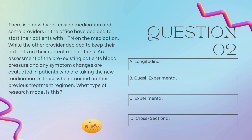Question number two: There is a new hypertension medication, and some providers in the office have decided to start their patients with hypertension on this medication, while the other providers decided to keep their patients on their current medications. An assessment of the pre-existing patients' blood pressure and any symptom changes are evaluated in patients who are taking the new medication versus those who remained on their previous treatment regimen. What type of research model is this? Is it A, longitudinal; B, quasi-experimental; C, experimental; or D, cross-sectional? Take a moment and tell me what you got in the comments.